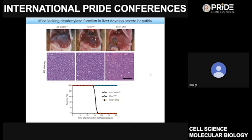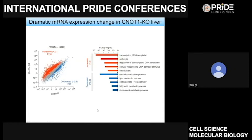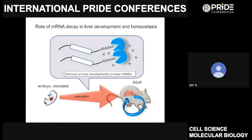We found that adult liver-specific CNOT1 knockout mice develop severe hepatitis, and consequently these mice die within three weeks after tamoxifen injection. We examined mRNA expression and found that many mRNAs, such as those encoding transcription factors and cell survival regulators, specifically increased, while mRNAs encoding liver function-related proteins decreased. These appear to be relevant to hepatitis development. To summarize, the CCR4-NOT complex-mediated mRNA decay plays a critical role in liver development and homeostasis, removing immature liver-specific mRNAs or unnecessary mRNAs, and removal of these mRNAs is critical.